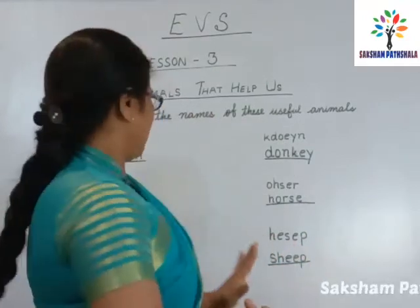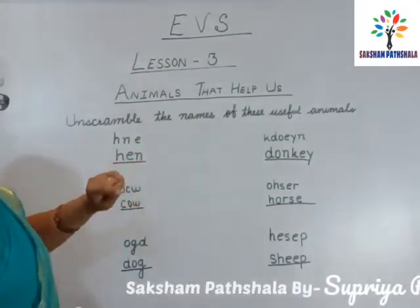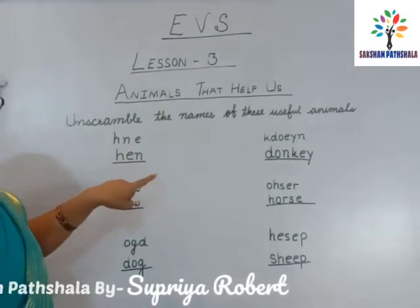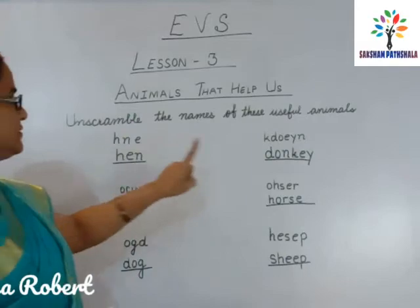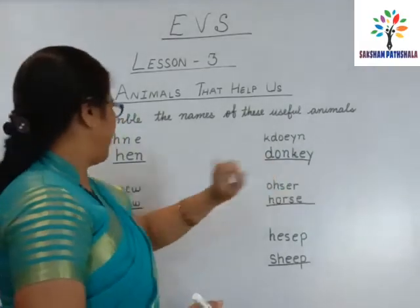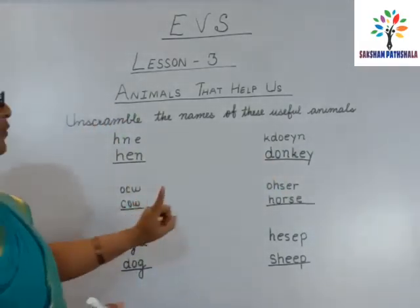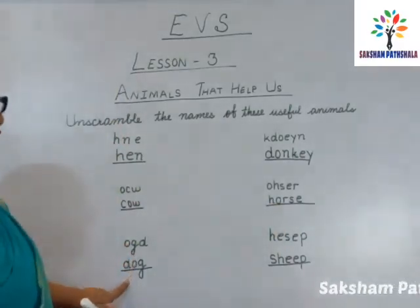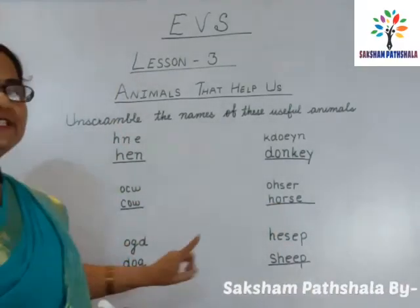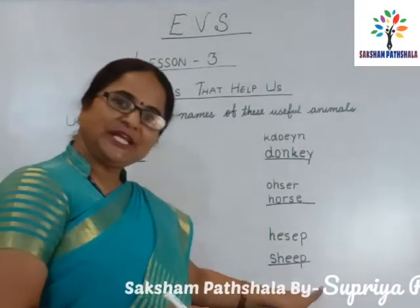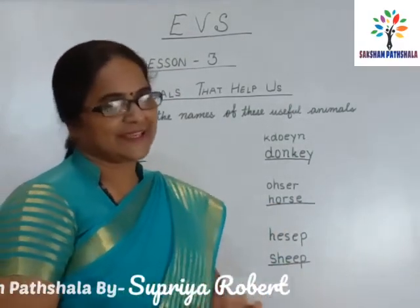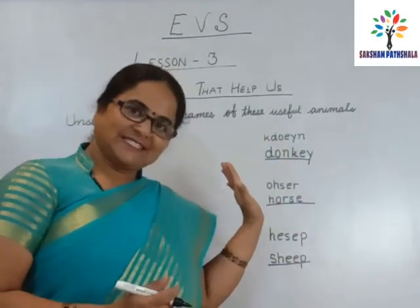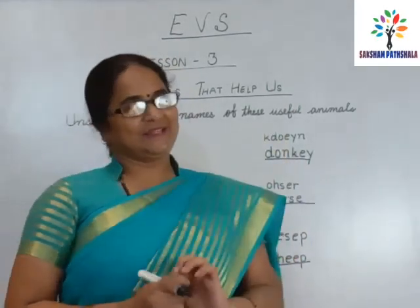Now, once again, see all the animal names: Hen, Donkey, Cow, Horse, Dog, Sheep. Okay. Now you have to learn these. Okay, bye.